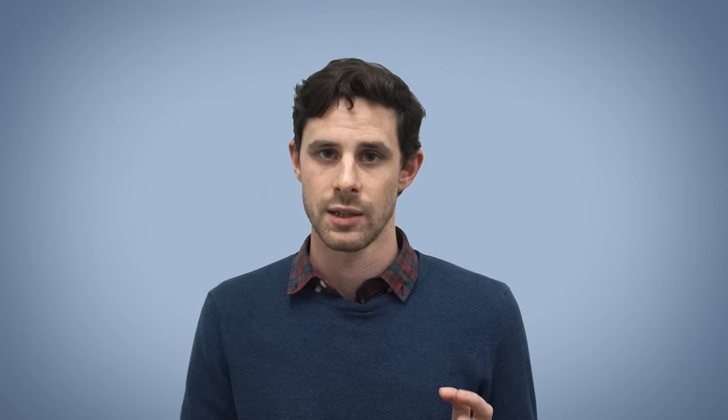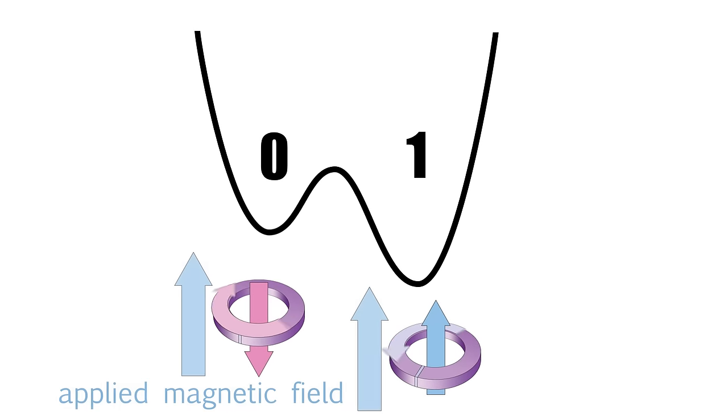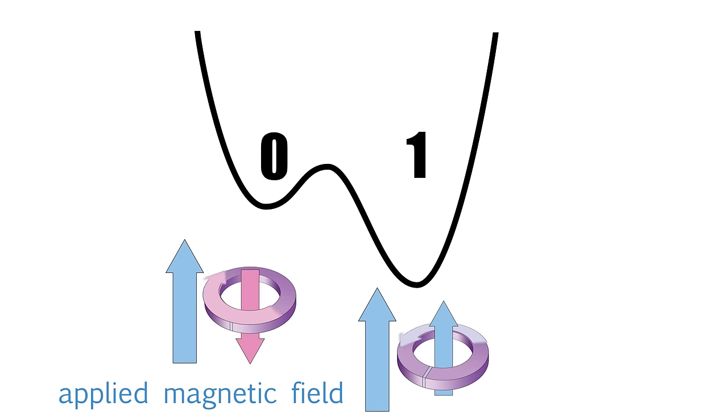The interesting thing is you can actually control the probability of it falling into the zero or one state, which is done by applying an external magnetic field to the qubit. The effect of this is to tilt the double well potential, increasing the probability of ending up in the lower well.